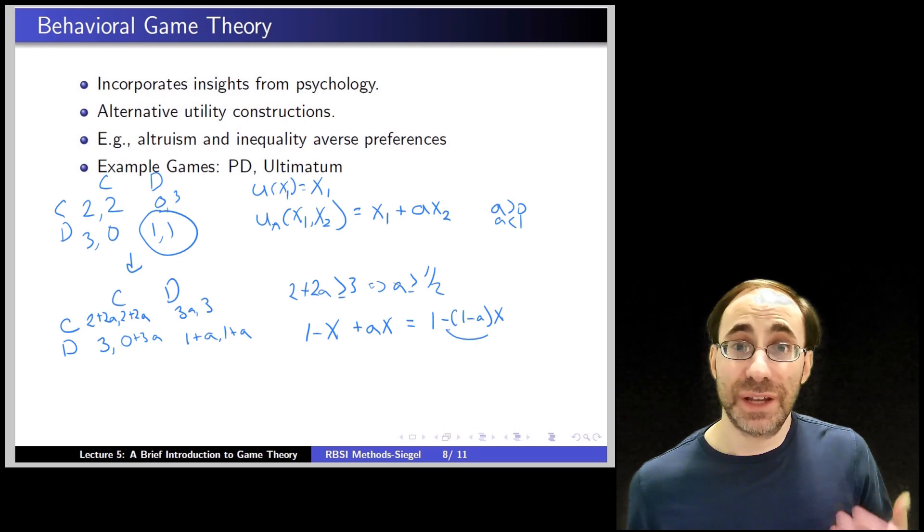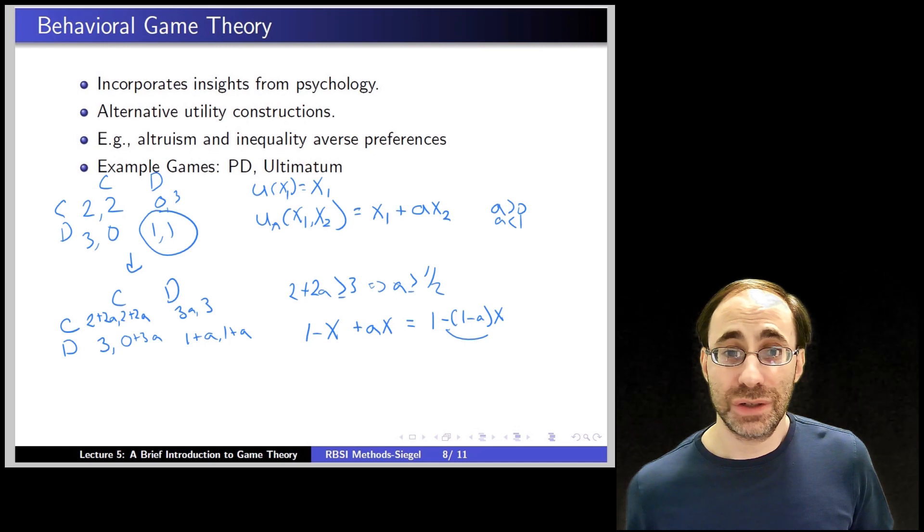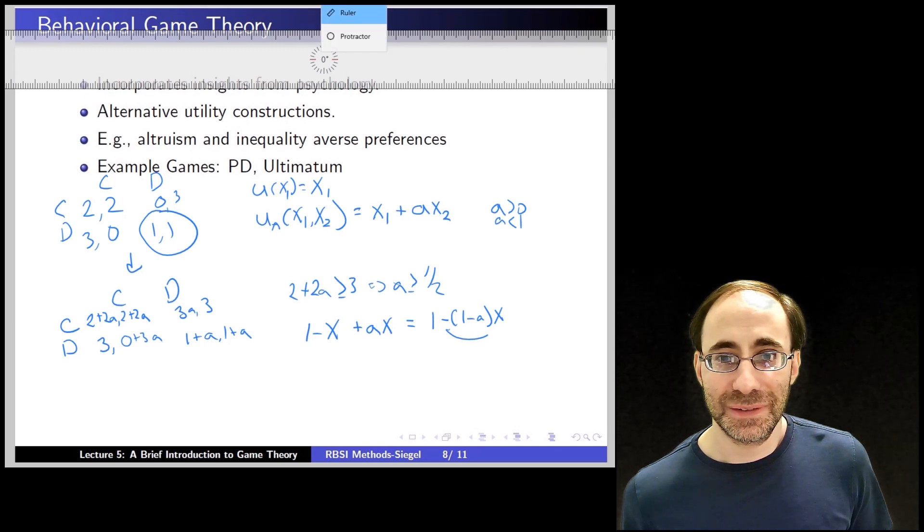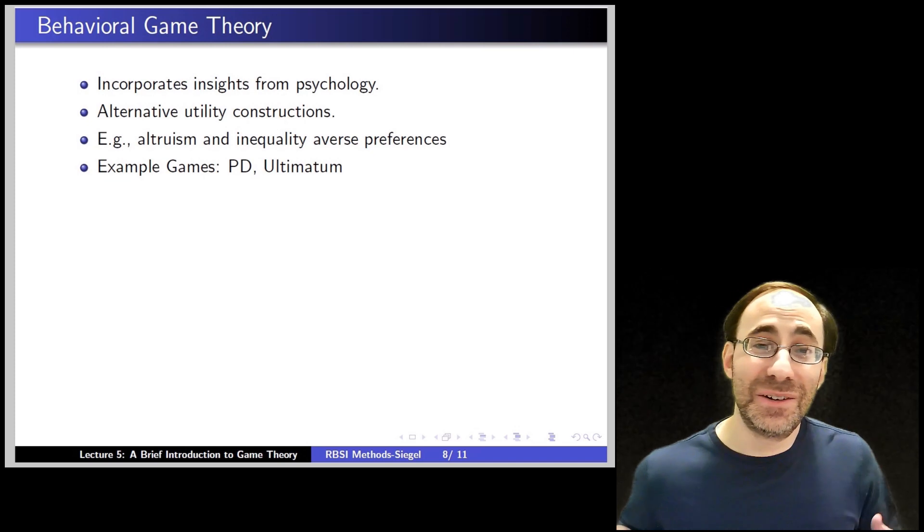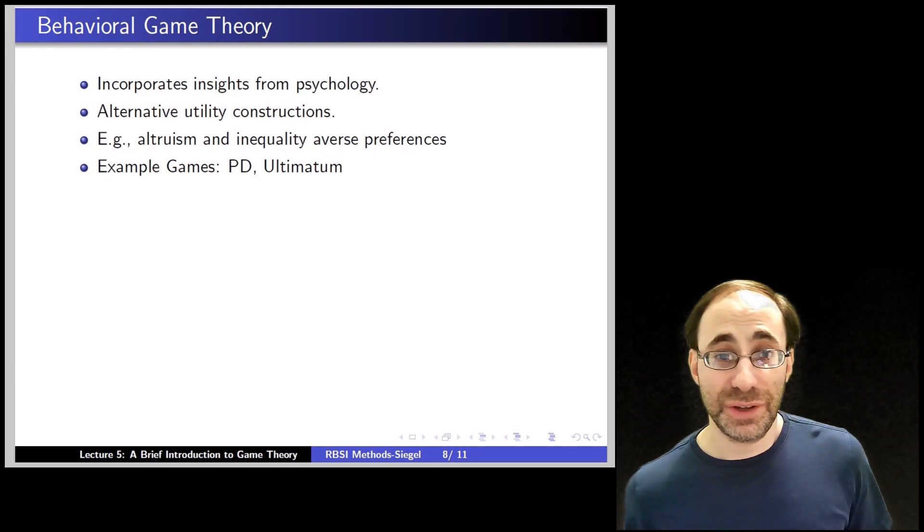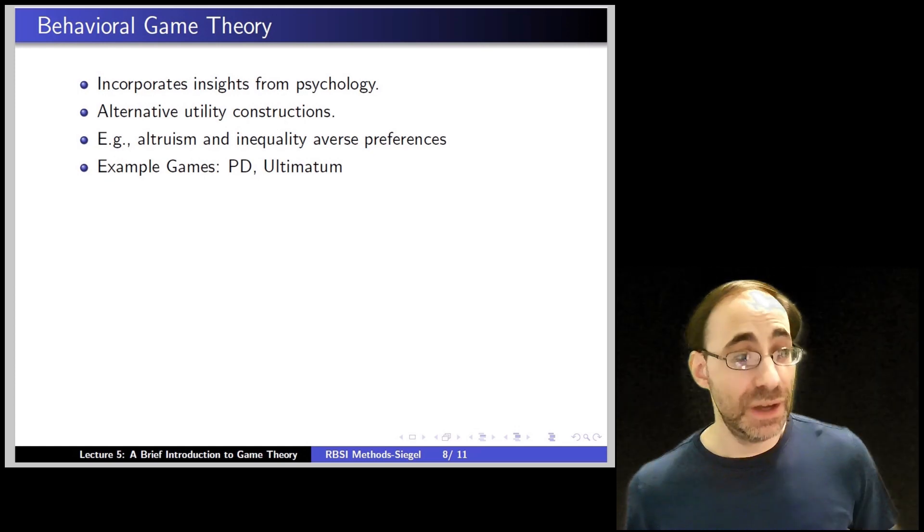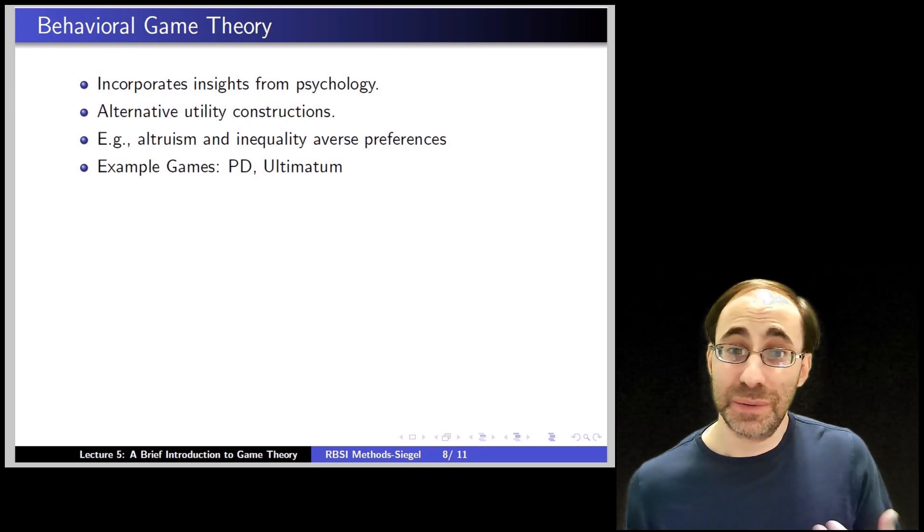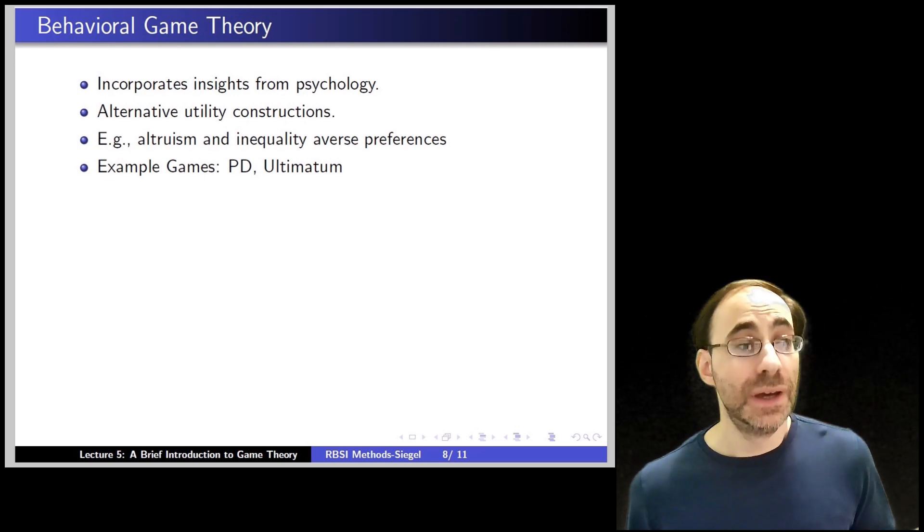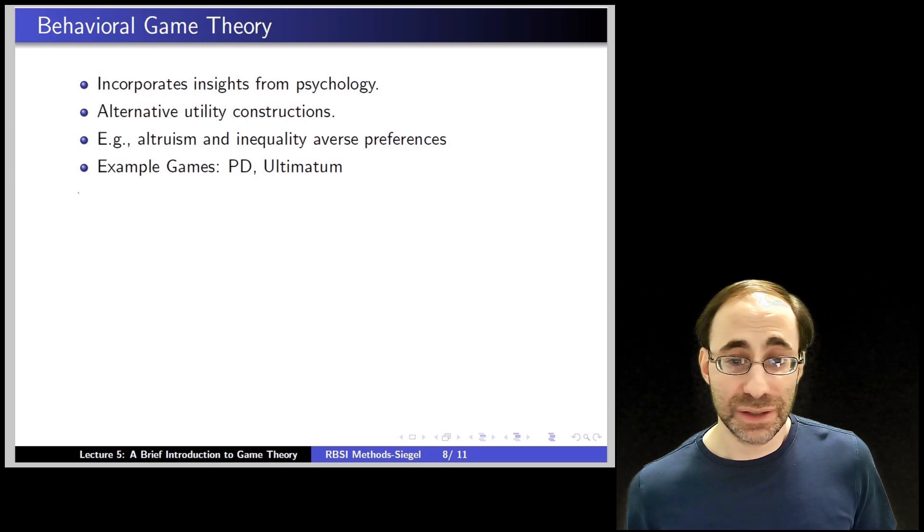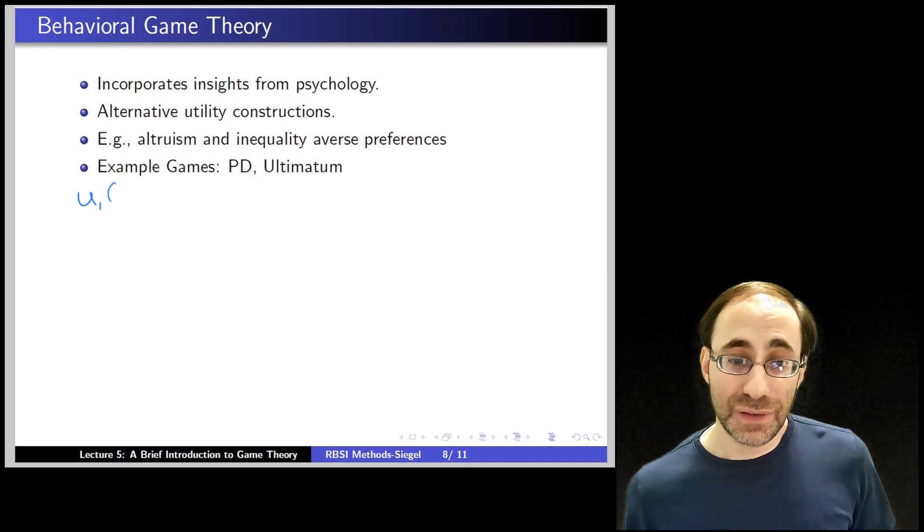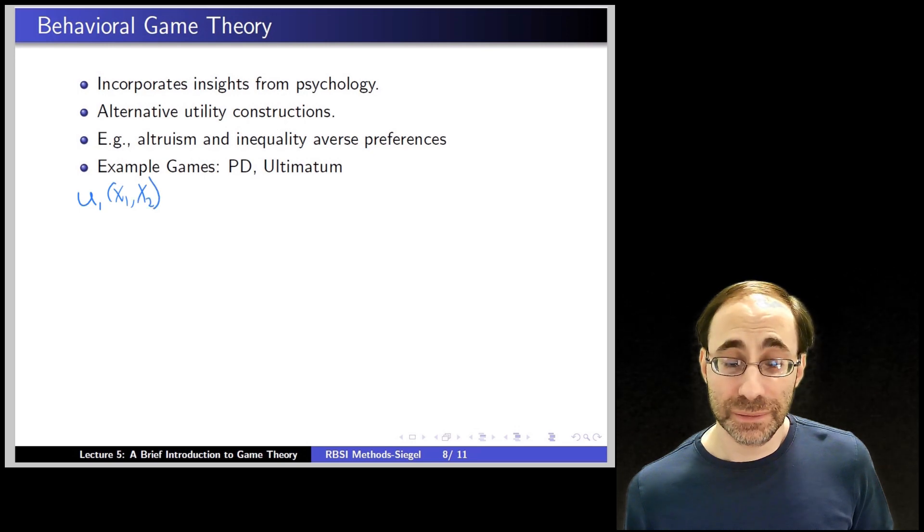But there are other possible psychological models we can use. Let's try another one. We'll start off with the ultimatum game again, but now we're going to try a different type of utility function based on inequality aversion. Inequality aversion means it's not just that you care about the other person. It's that you prefer the inequality between your payoff and their payoff to be smaller, all else equal.